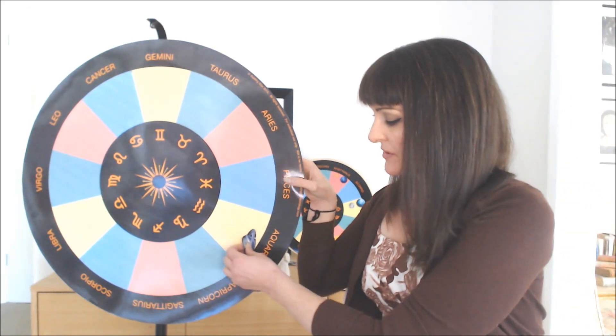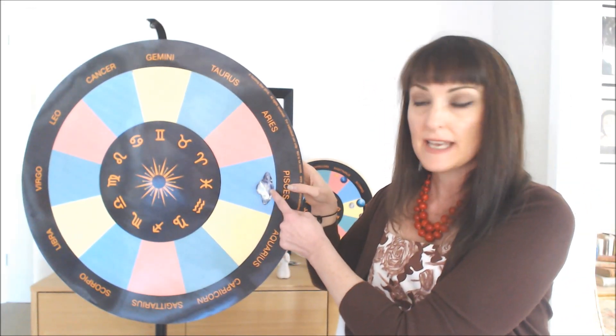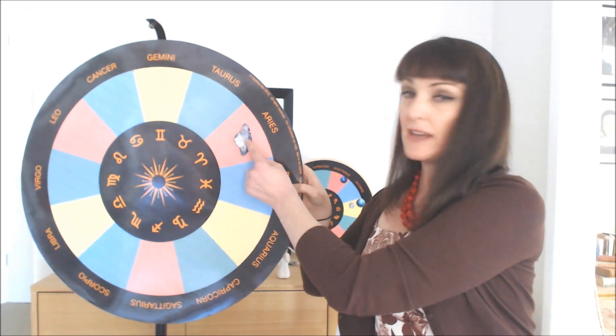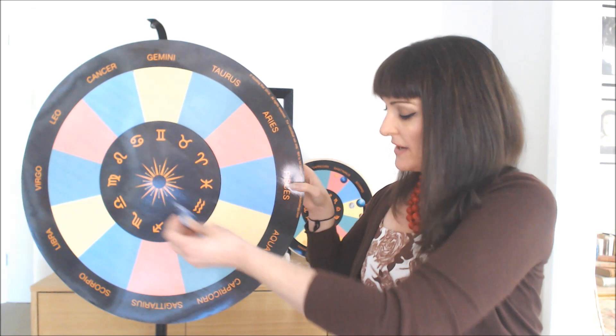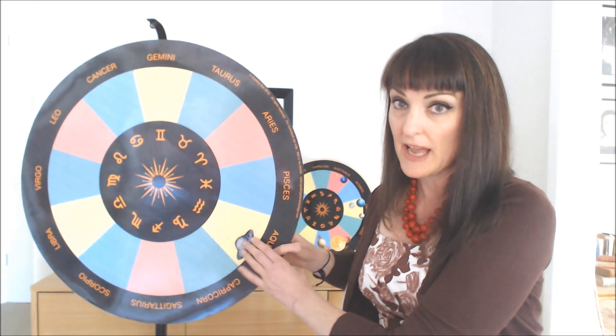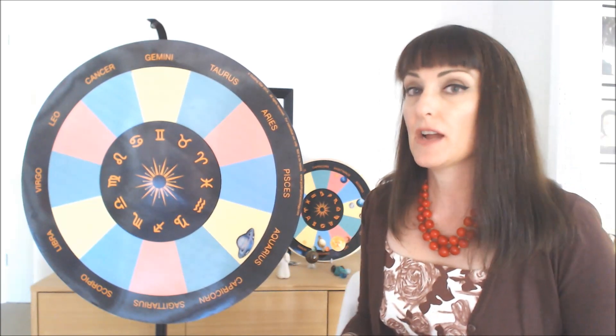However, in about two and a half to three years time, he'll be in Pisces. And then three years after that, he'll be in Aries and three years after that, roughly he'll be in Taurus and so on around the horoscope. So you do need to check out where he is transiting, moving through at this current point in time.